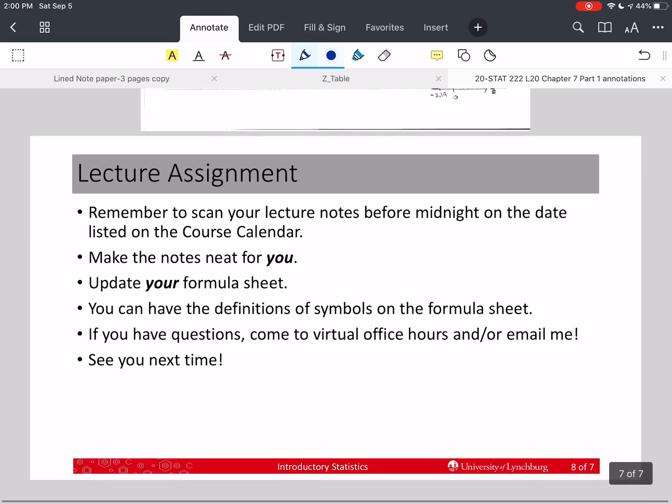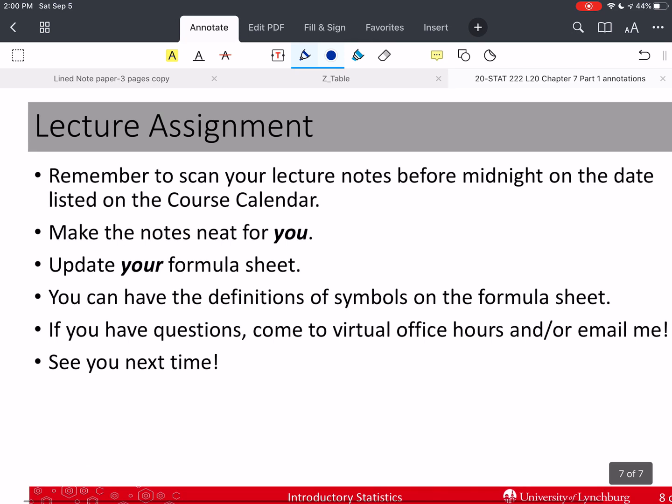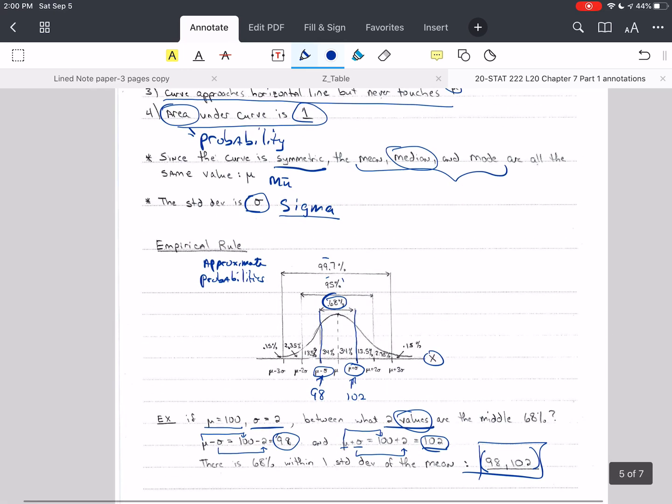So I'm going to skip down to here and say, remember to scan in your lecture notes before midnight of the date listed on the course calendar. Make those notes neat for you. Update your formula sheet with these percentages, especially for the empirical rule. If you want to draw the picture, that's fine. Remember, if you're taking the online course, you can basically have whatever you want on your formula sheet. If you're taking a face-to-face class, you can only have formulas, and you will be allowed for the empirical rule to have these three percentages and put within one, within two, and within three standard deviations of the mean.